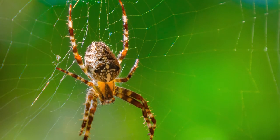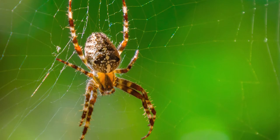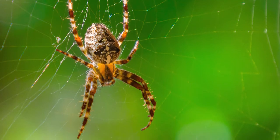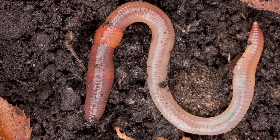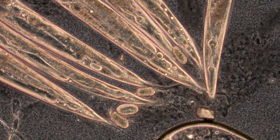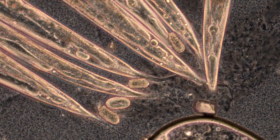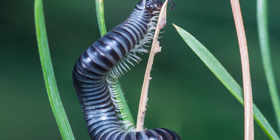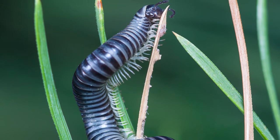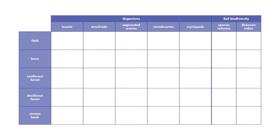We move all spiders, ticks, and other arachnids to another section. We move all earthworms, which are segmented worms, to another section. We move all roundworms, which are worms with smooth sides, to another section. We move all centipedes and other myriopods to the remaining section. Now that the invertebrates have been sorted into categories, we count the number of organisms in each category and record these numbers in our table.